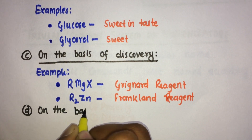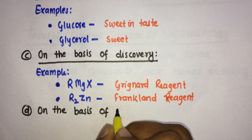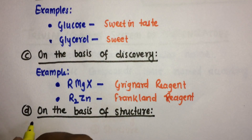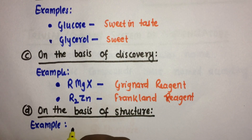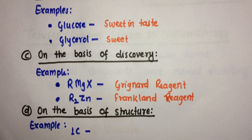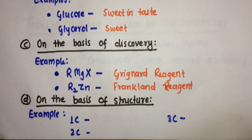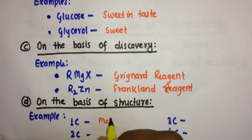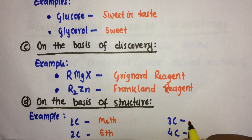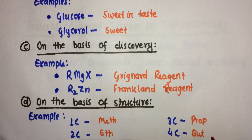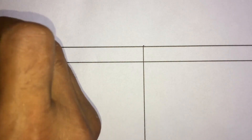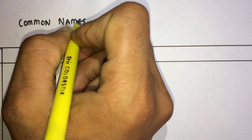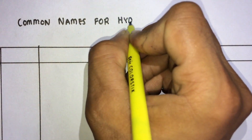On the basis of structure, the number of carbons in the carbon chain can be used for naming: one carbon is 'meth', two carbon is 'eth', three carbon is 'prop', and four carbon is 'but'. Now we will see common names for hydrocarbon derivatives.